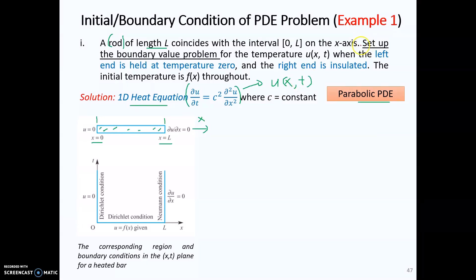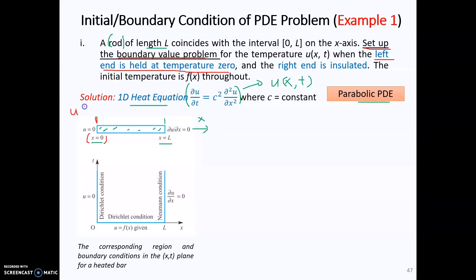In this question, you need to set up the boundary value problem for the temperature U(x,t) when the left end is held at zero temperature. The left end is at x equal to 0, so the temperature U at x equal to 0 for all time will be equal to zero. This is your first boundary condition.